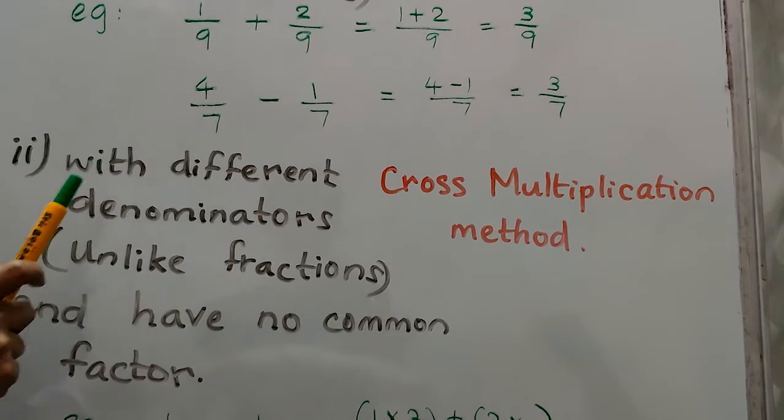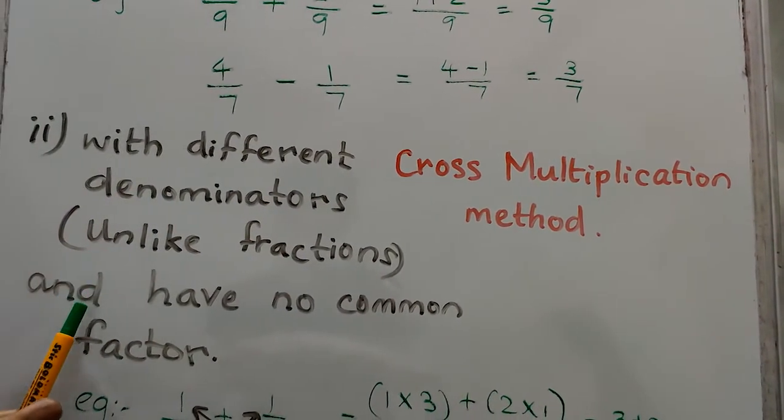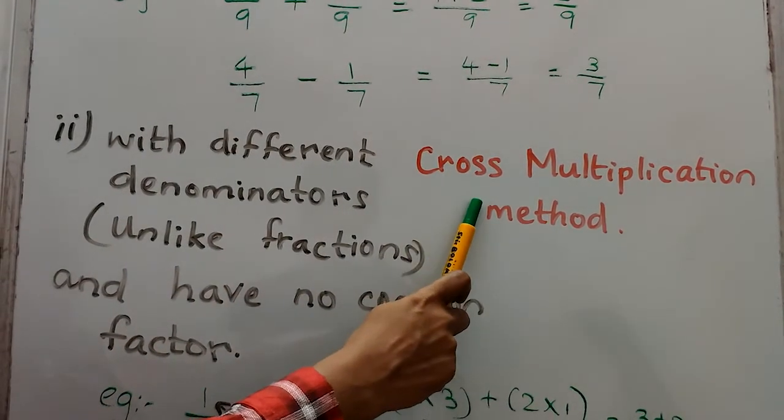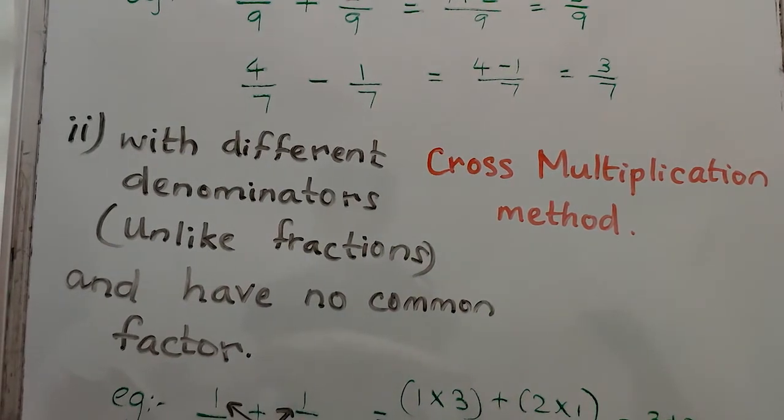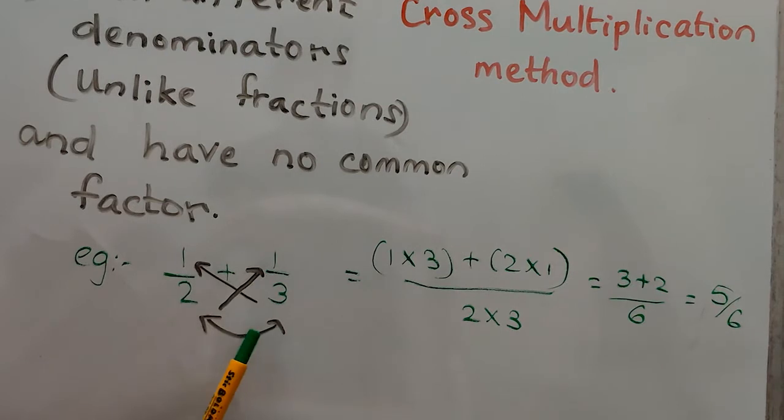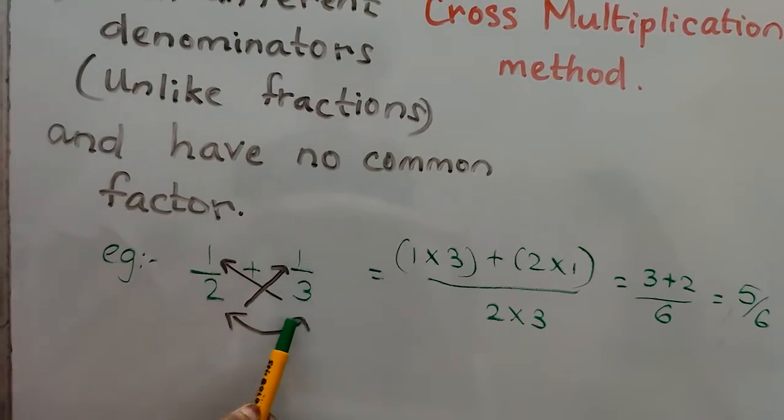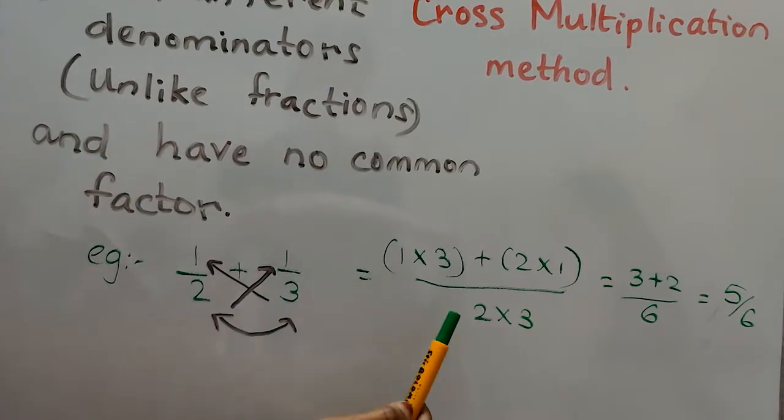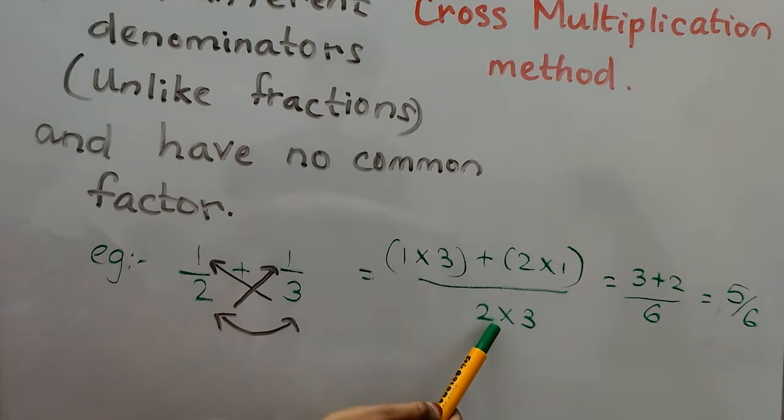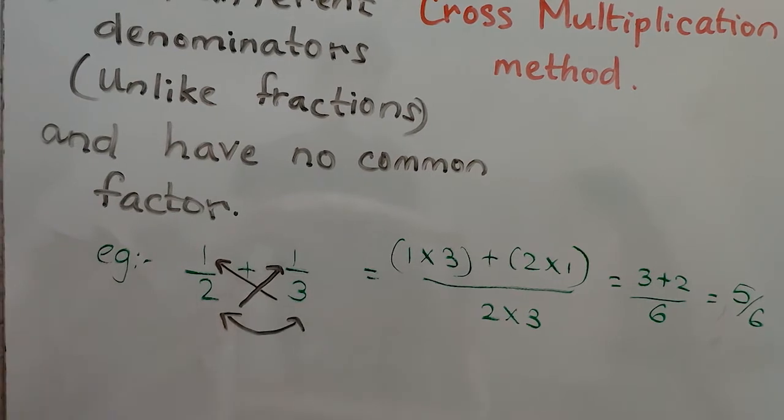For fractions with different denominators, unlike fractions with no common factor, use cross multiplication method. Example: 1 by 2 plus 1 by 3. Cross multiply: 3 into 1 plus 2 into 1 by 2 into 3. Multiply the denominators: 3 plus 2 by 6 equals 5 by 6.